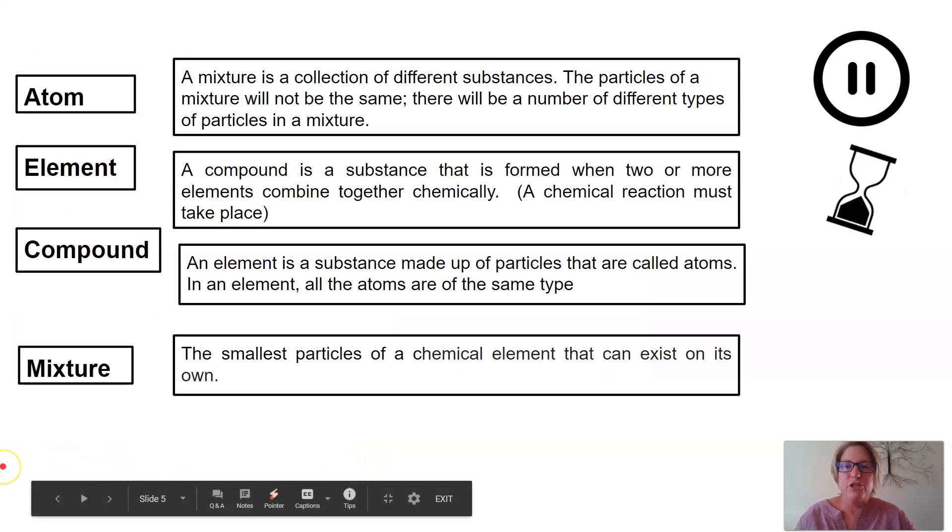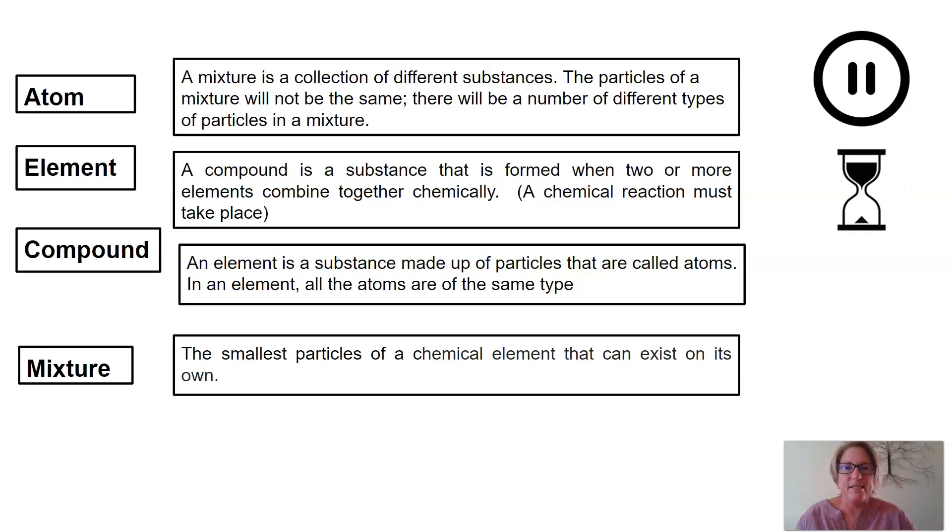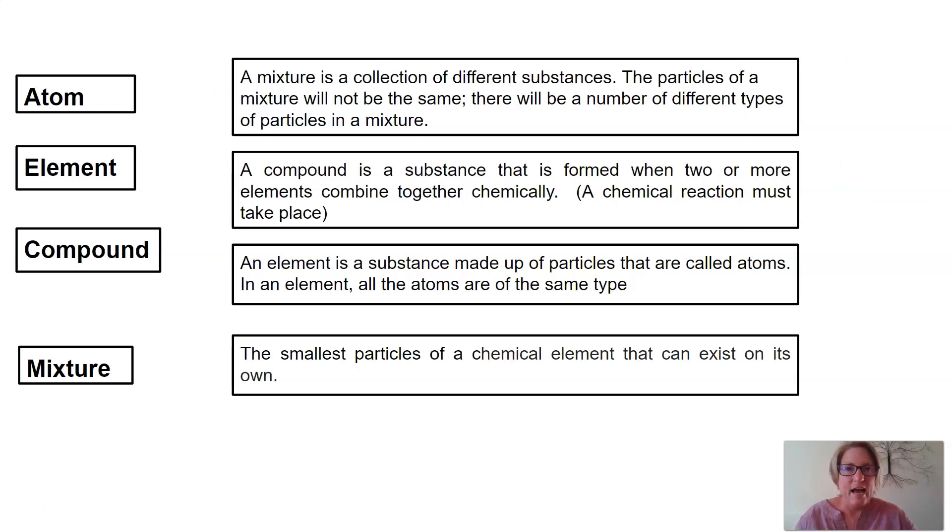This is just a revision from yesterday's lesson. It's a matching columns activity, so you can press pause and I will wait for you while you match the terms with the definitions. Well done, I'm sure you found that really easy, but let's just go over your answers quickly. An atom is the smallest particle of a chemical element that can exist on its own. An element is a substance made up of particles that are called atoms. In an element, all the atoms are of the same type. A compound is a substance that is formed when two or more elements combine together chemically, so a chemical reaction must take place in order for a compound to form. And lastly, a mixture is a collection of different substances. The particles of a mixture will not be the same, and there will be a different number of different types of particles in the mixture.